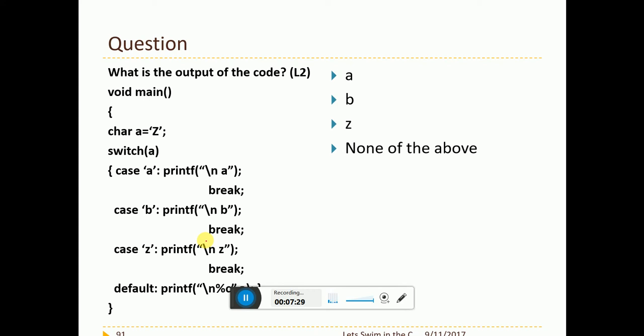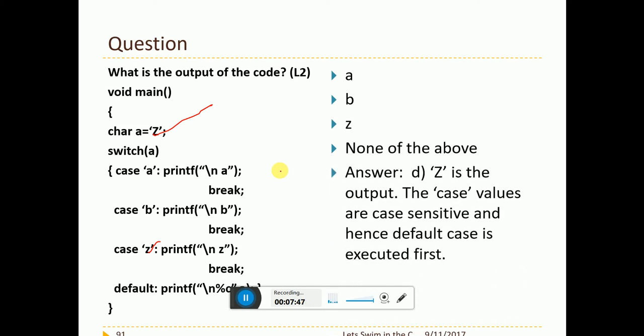Now, char A equal to Z and I am trying to compare it with A, B, C, A, B, Z through the case statement. What will be the output? This is upper case letter. This is lower case letter. Case is all switch case is all case sensitive. Hence this won't work. So the output would be simple. It is D. What is D here? None of the above. Simple.